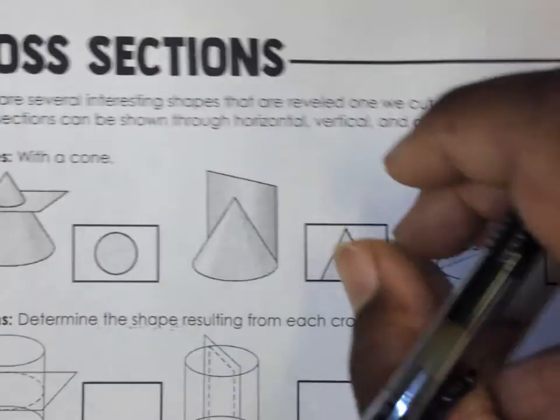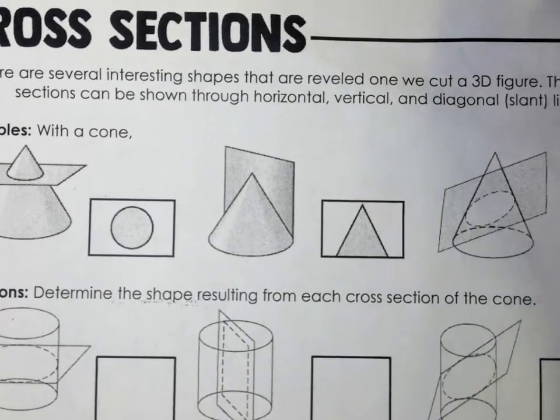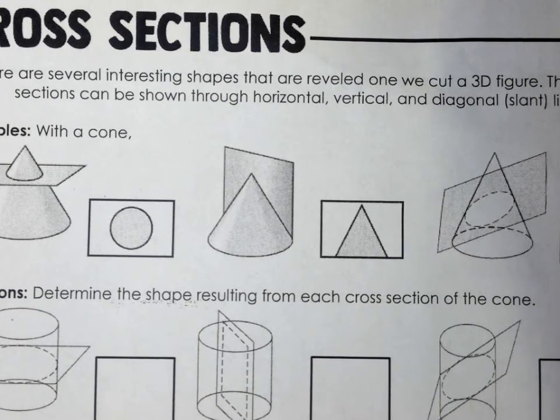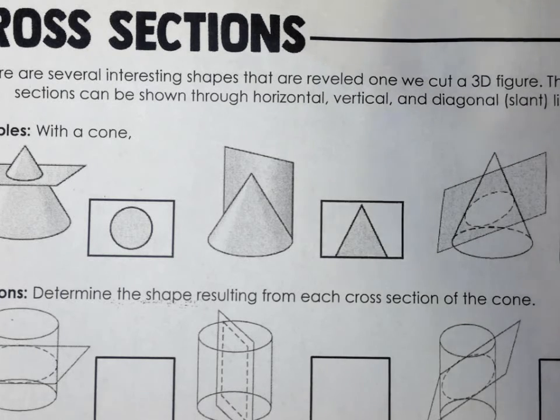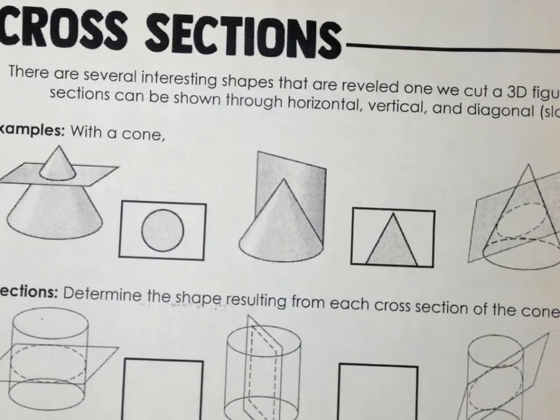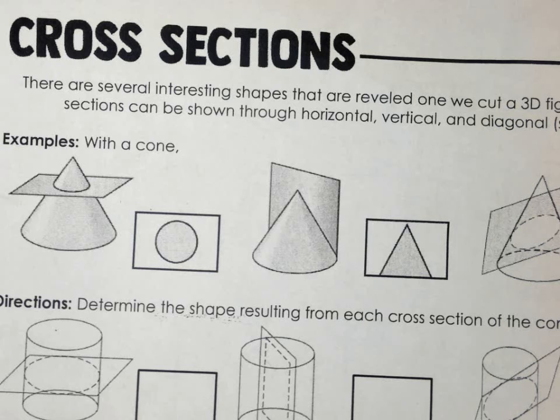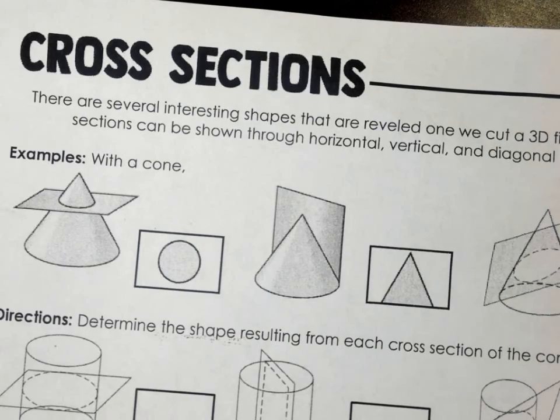On the back, cross sections. There are several interesting shapes that are revealed once we cut a 3D figure. The cross sections can be shown through horizontal, vertical, and diagonal lines. Okay, so let's show you an example up here with the cone. You got a cone. They split it a couple different ways with a plane, a flat surface creating a cross section. They split it horizontally first. When they split it horizontally, what shape do you see when you open that up? Circle, right?